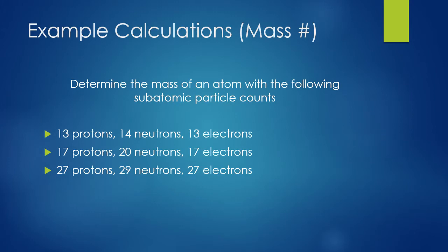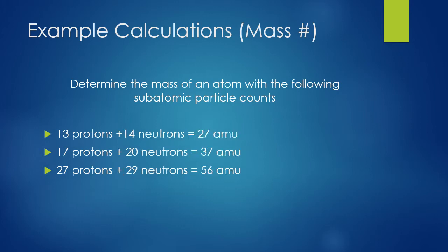Let's try a few more. In these three examples, we're given proton, neutron, and electron counts. Remember, when calculating mass, electrons don't count — ignore that information. Simply add the protons to the neutrons for each one. For the first: 13 plus 14 gives 27. The next gives 37, and the last gives 56.